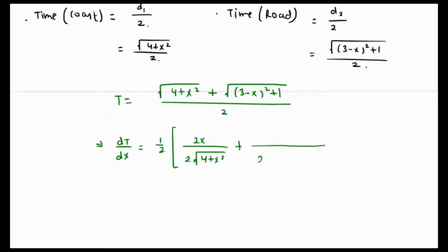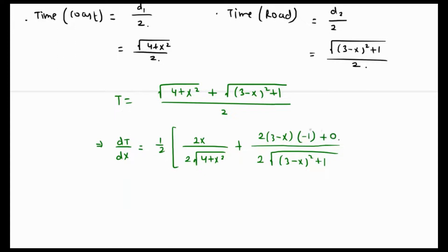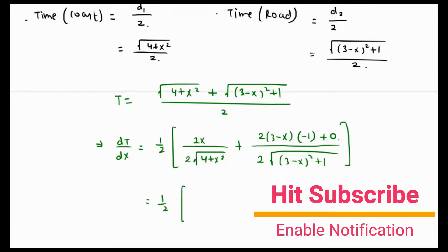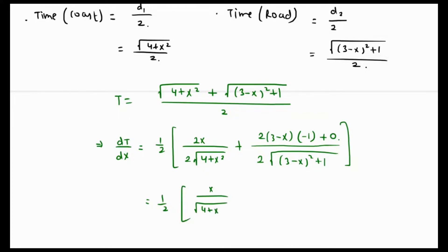Continuing the differentiation using the power chain rule, the second term becomes one-half times 2(3 − x) times (−1) over the square root of (3 − x)² + 1. After simplification, the two factors of 2 cancel, giving us dT/dx equals x over the square root of (4 + x²) minus (3 − x) over the square root of (3 − x)² + 1.